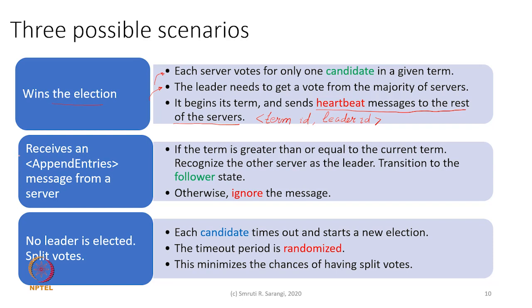In the second scenario, if a server either didn't participate in the election or did not win, but gets a heartbeat or append-entries message from a server with a term greater than or equal to its current term, it recognizes that server as the leader and transitions to the follower state. If a candidate gets a message with a higher term number in the middle of an election, it recognizes the new leader and transitions to the follower state. If the message has a lower term, it is stale and we simply ignore it.